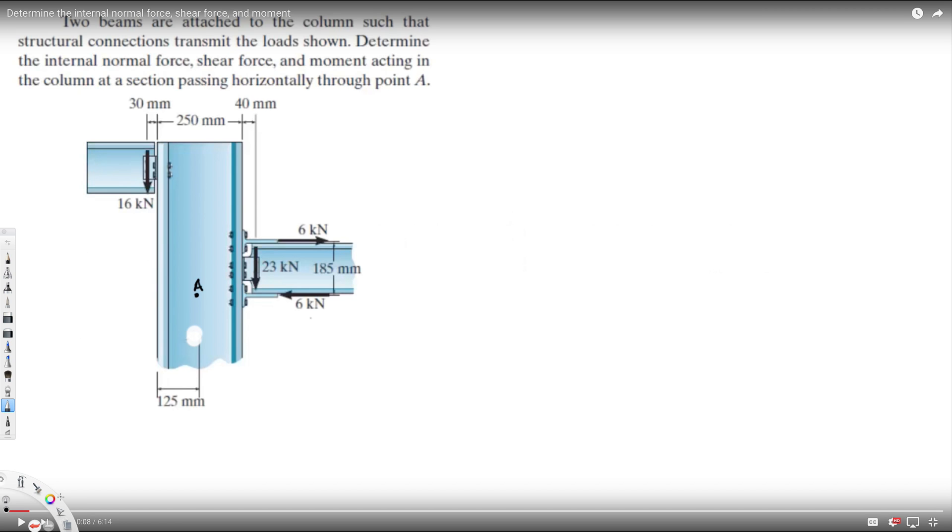Hello guys, we have this question. The problem is asking: two beams are attached to the column such that structural connection transmits the load shown. Determine the internal normal force, shear force, and moment acting in the column at a section passing horizontally through point A.